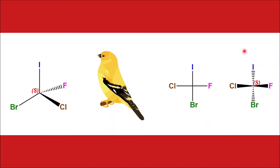The question is how to confirm whether the interconversion that we have done is correct or not. The best way is to find out the RS configuration, which we already know. Find out the RS configuration for the initial wedge-dash structure — here the configuration is S — and after completing the conversion, find out the RS nomenclature again. If the configuration is the same, as you can see here it is S configuration again after conversion, it means that you have done your interconversion correctly.